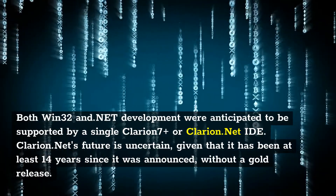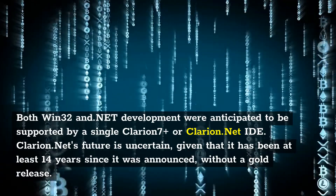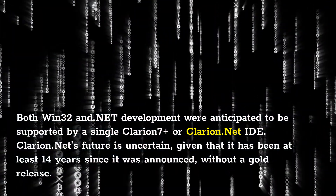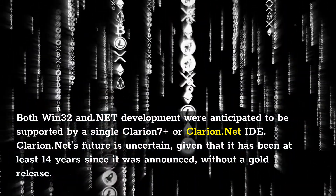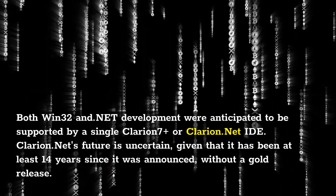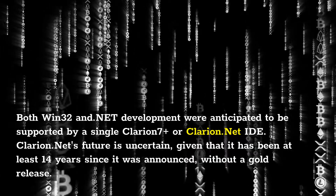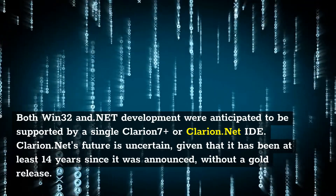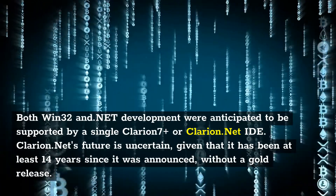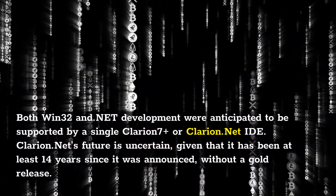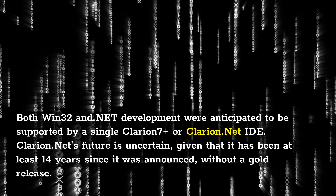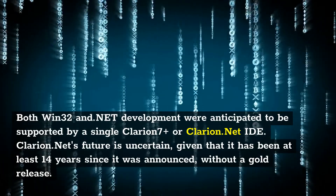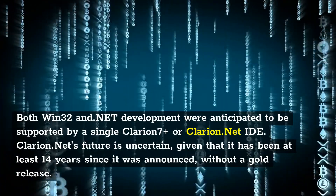Clarion# is a beta .NET framework version of the language. Clarion is still a Win32 development environment. Although Clarion# and C7 share the same IDE, they are now sold as independent products. Clarion# does not yet feature a dictionary editor or an application generator, unlike Clarion 7 and later releases. Both Win32 and .NET development were anticipated to be supported by a single Clarion 7 Plus or Clarion.NET IDE. Clarion.NET's future is uncertain, given that it has been at least 14 years since it was announced without a gold release. The option to build .NET apps with VB.NET and C# remains in the new IDE in Clarion# mode.